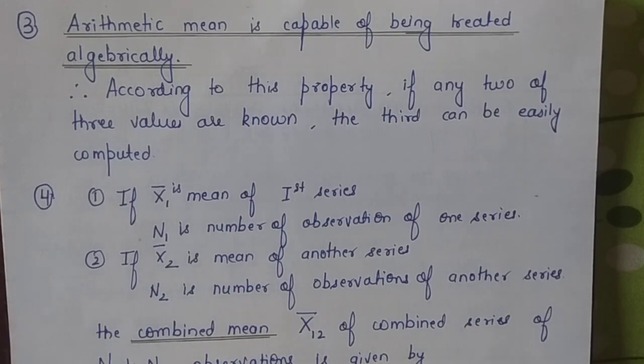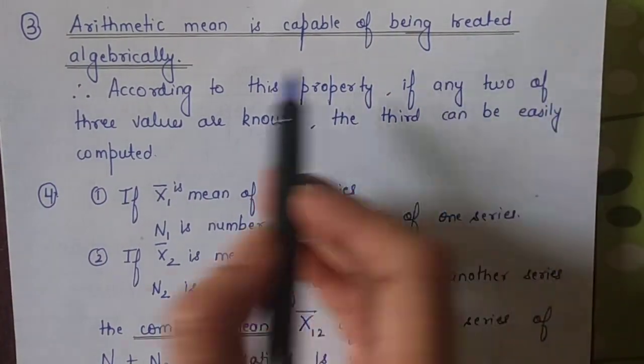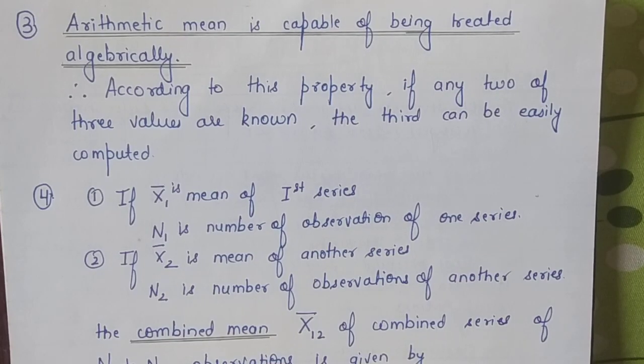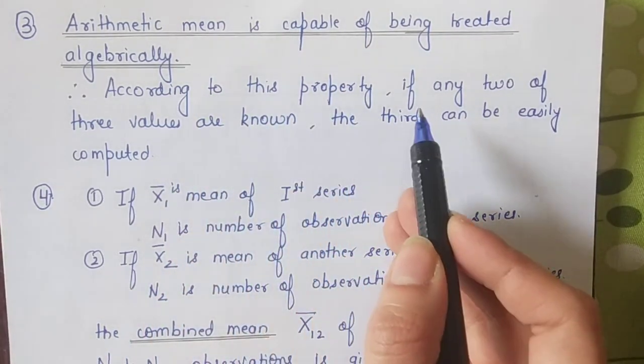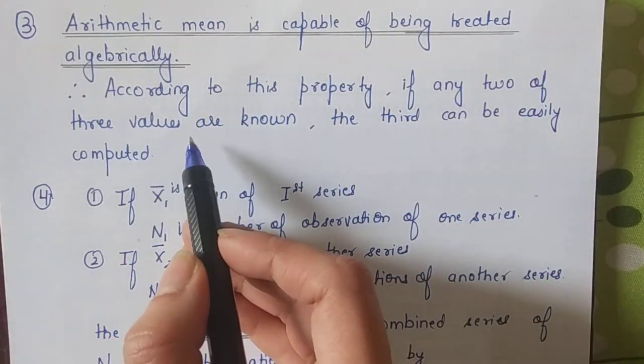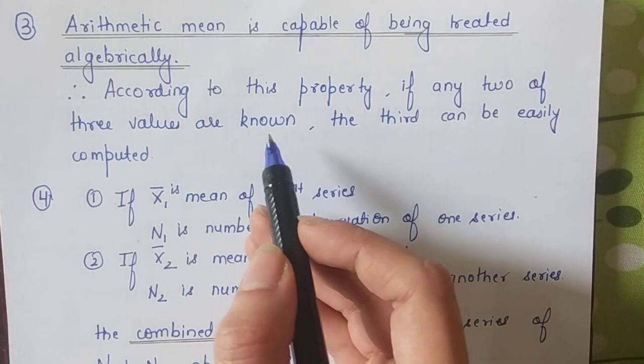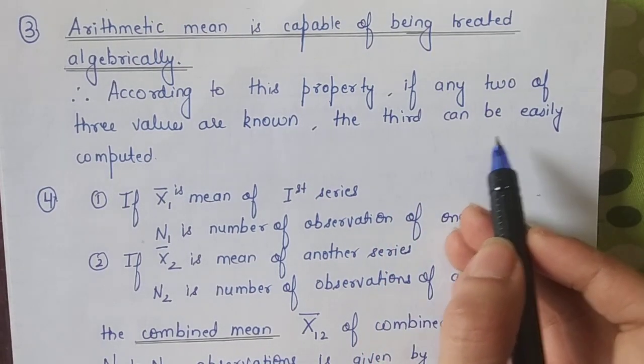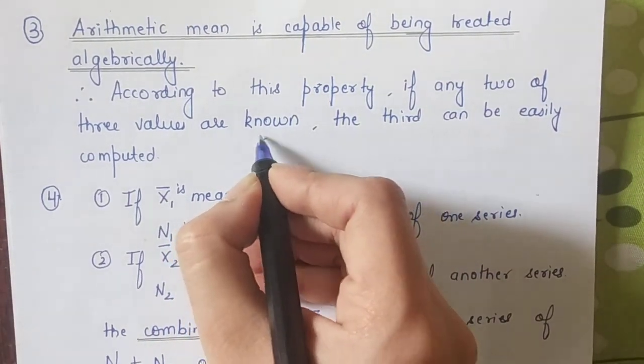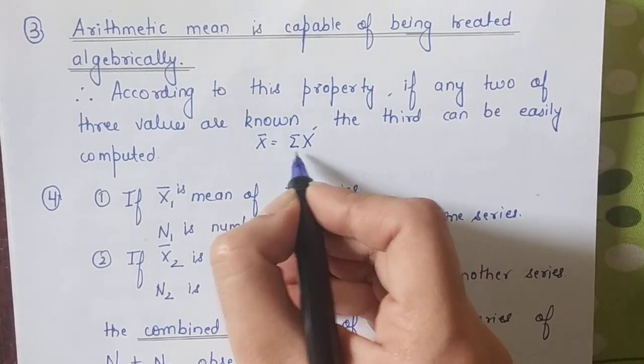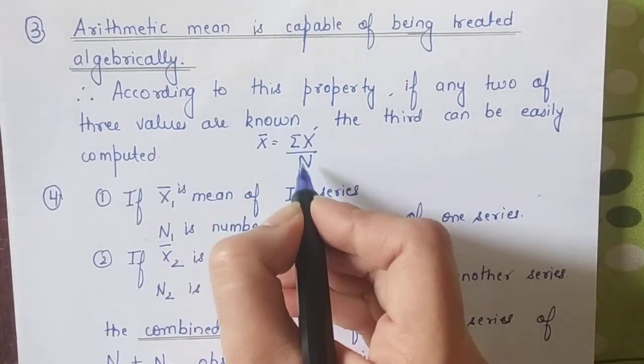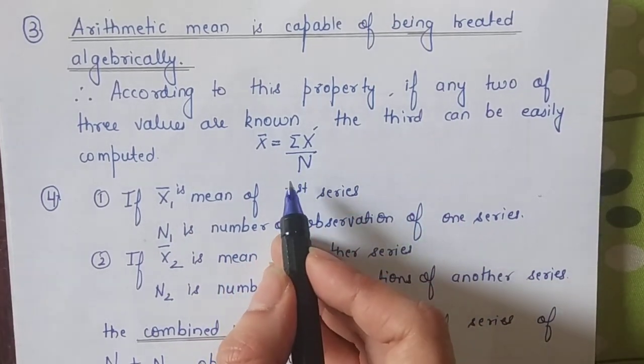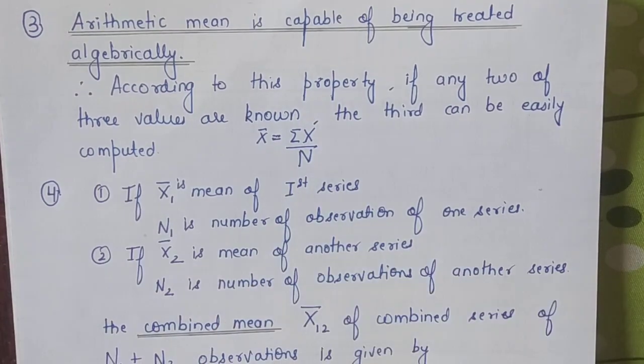Now the third property: arithmetic mean is capable of being treated algebraically. According to this property, if any 2 values are known among sigma x, mean, or number of items, then the third can be calculated using the formula. The formula is x̄ = Σx/n. Since this is an algebraic formula, the remaining value can be calculated easily.